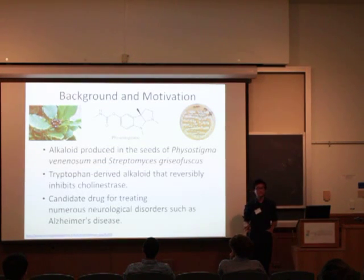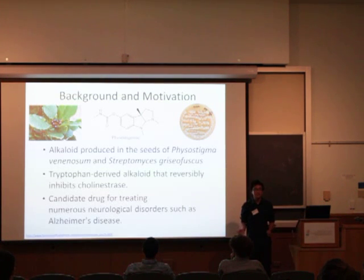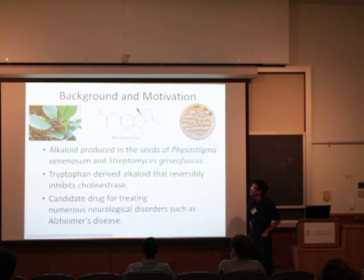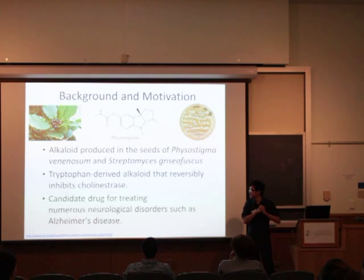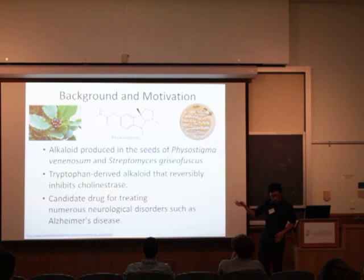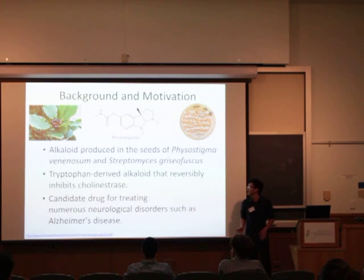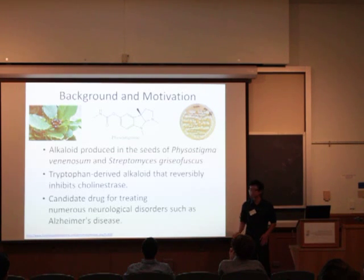Acetylcholine is a neurotransmitter in the brain, and cholinesterase is an enzyme that cleaves acetylcholine into an acetyl group and a choline group. Physostigmine inhibits this mechanism. Because of this biological property, it is currently a candidate drug called eserine sulfate, and it is used to treat neurological disorders like Alzheimer's disease and coma.